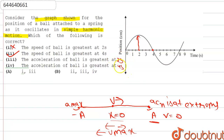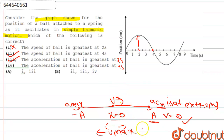The third option states that acceleration is greatest at two seconds. We established that at two seconds the ball is at the extreme position, so acceleration is indeed maximum there — the third option is correct. The fourth option claims acceleration is greatest at four seconds, but at the mean position acceleration is zero and velocity is maximum, so the fourth option is incorrect.